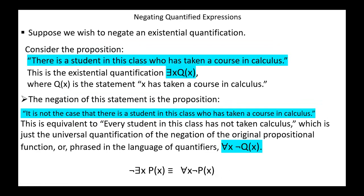Next, suppose we want to negate an existential quantification. Consider the proposition: there is a student in the class who has taken a course in calculus. This is the existential quantification, exists x, Q(x), where Q(x) is the statement 'x has taken a course in calculus.' This is equivalent to: every student in this class has not taken calculus, which is just the universal quantification of the negation of the original propositional function, or for all x, not Q(x). This means that the negation of exists x, P(x) is equivalent to for all x, not P(x).